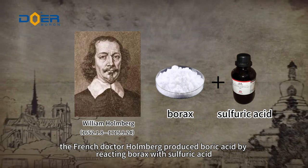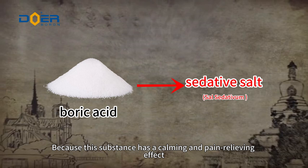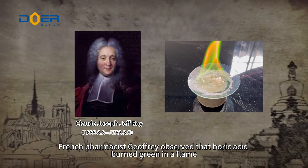But Holmberg did not know that the substance he prepared was boric acid. Because the substance had a calming and pain-relieving effect, he named it "calming salt." In 1732, French pharmacist Jeffrey observed that boric acid burned green in a flame, which made him suspect that borax contained a new element.